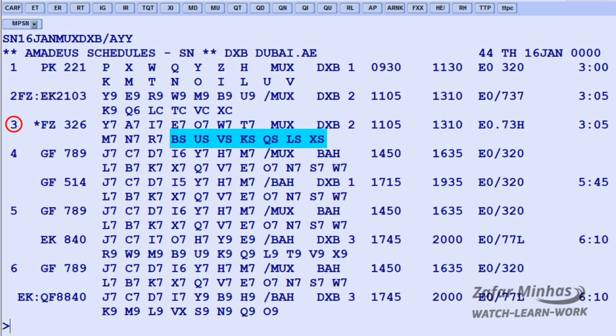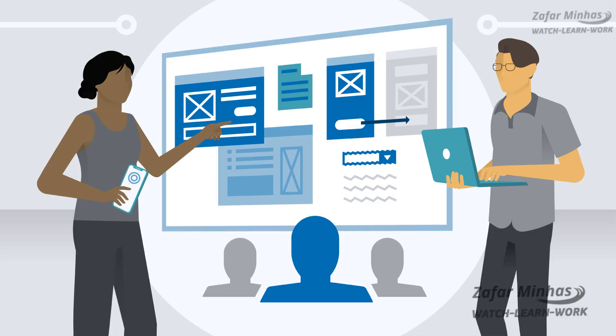While in line 3, flight flydubai FZ326 operating flight — seats in Bravo class, uniform class, Victor class, Kilo class, Quebec class, Lima class, and X class have already been sold and are shown with the status S. And that's it — you have just learned how to request a schedule display.